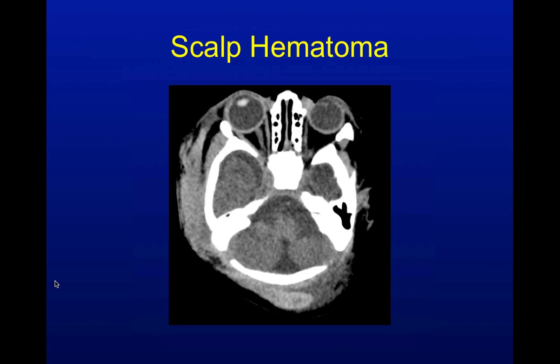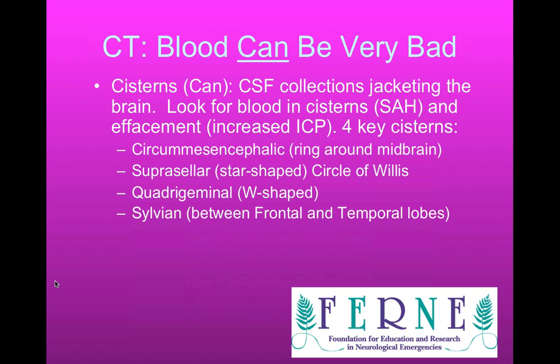Don't forget to look outside the brain. In this case, there's a big scalp hematoma here — you probably picked that up on clinical exam as well, but don't forget to look at it. Then you're going to be interested in doing bone windows to see if there's a skull fracture underneath there.